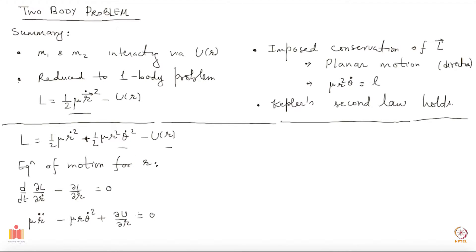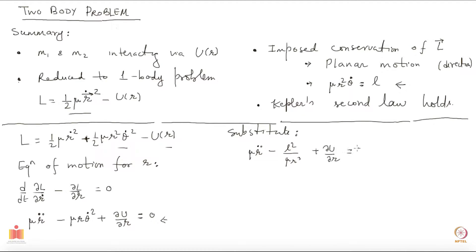I can write du/dr instead of the partial derivative because u depends only on r — there is no distinction between a partial and total derivative here. Substituting for theta-dot using the angular momentum, we get: mu r-double-dot minus L-squared over mu r-cubed plus ∂u/∂r equals 0.